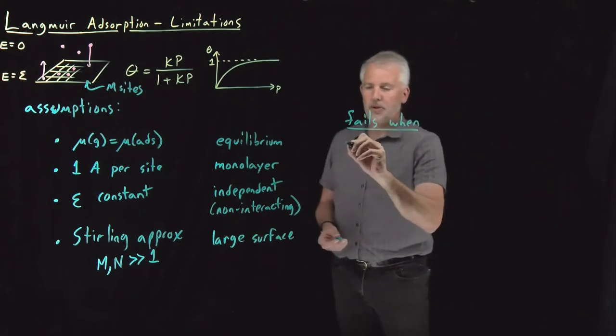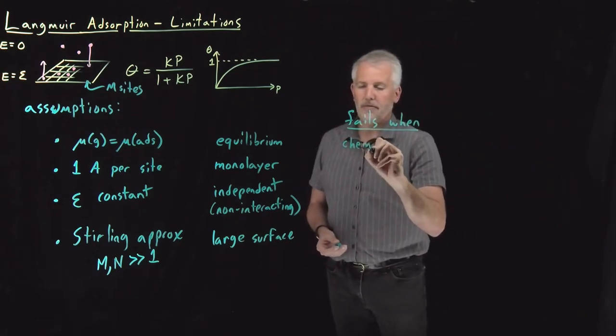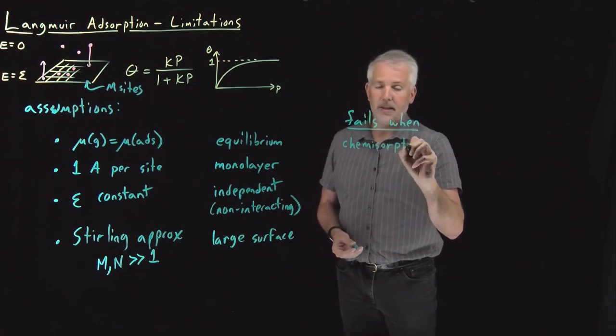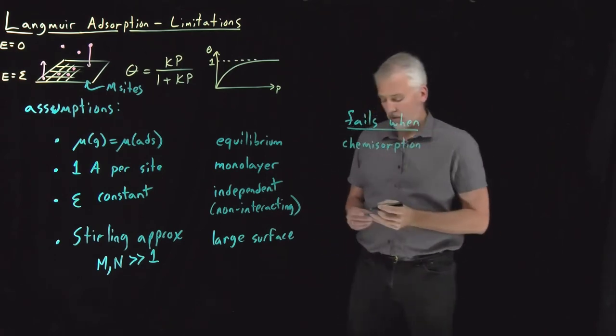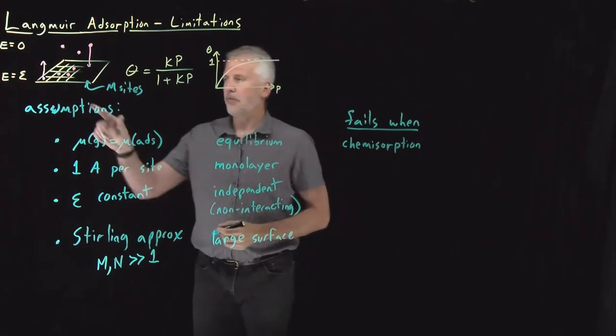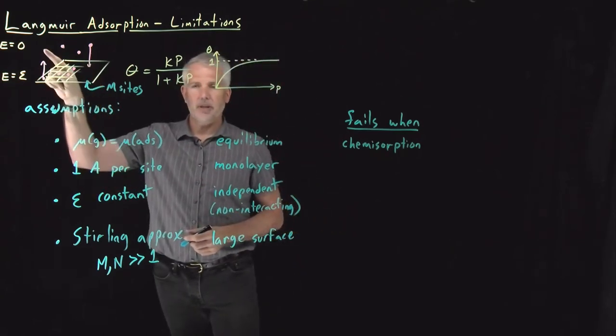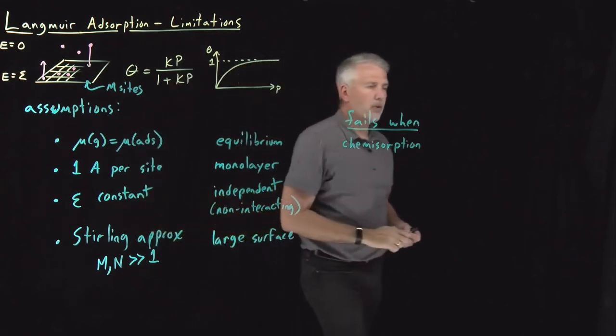This assumption will fall apart when the system is not in equilibrium. One circumstance that can be true is when we don't have physisorption, but we do have chemisorption. So the process I've been talking about so far is a physisorption process. Molecules bind and then reversibly they can desorb or come off the surface.